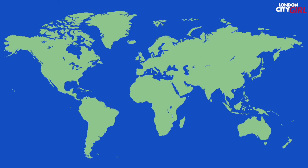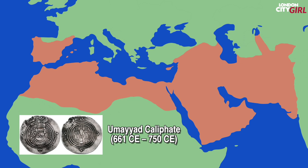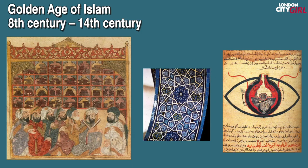661 CE saw the rise of the Umayyad caliphate, the second of the four major caliphates established after the death of Muhammad. The Umayyads continued the Muslim Arab conquest begun by Muhammad. These conquests saw a century of rapid expansion of territory and the spread of the Islamic religion and culture. This was followed by the Islamic golden age which saw the world benefit from Muslim medical discoveries, their preservation of Greek, Persian and Roman texts and their adoption of innovations from across the world.